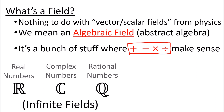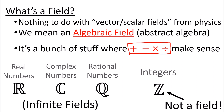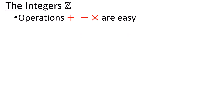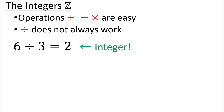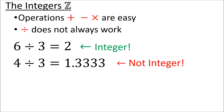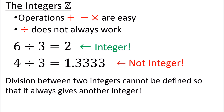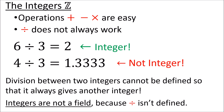These fields are called infinite fields because they each contain an infinite number of members. The integers, however, are not a field. This is because, even though addition, subtraction, and multiplication are easily done with integers, division does not always work for integers. For example, 6 divided by 3 works out nicely to the integer 2, but 4 divided by 3 doesn't work out to be an integer. Division between two integers cannot be defined in a way that always gives us another integer, which means that the integers are not a field because division isn't well defined for them.